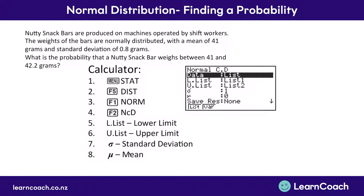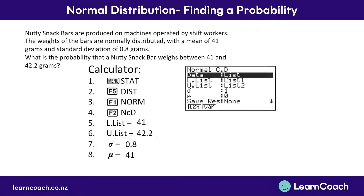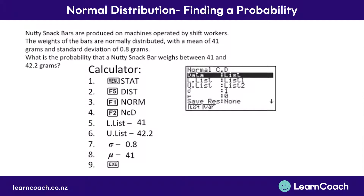We also need to input our standard deviation and our mean. The standard deviation is 0.8 grams and the mean is 41 grams. The lower limit is 41 grams and the upper limit is 42.2 grams. Type each of these in next to the relevant fields — upper, lower, standard deviation, and mean — and after each entry press execute to save it in your calculator. Once they're all saved, press execute again or use the solve button.